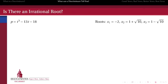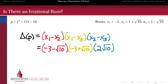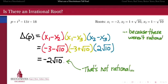Second, our discriminant can tell us whether or not there is an irrational root for a polynomial with rational coefficients. Here's a cubic that has two irrational roots, 1 plus or minus radical 10. When we compute the discriminant by multiplying the pairwise differences of these roots by one another, we get negative 2 radical 10, which is not a rational number. That's not an accident, because we got it by subtracting and multiplying numbers together that were not all rational.